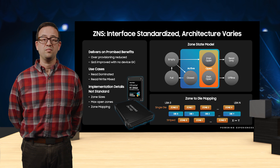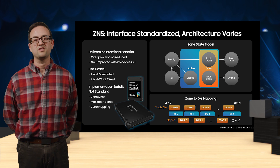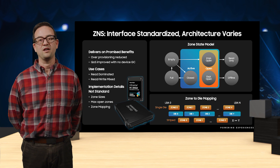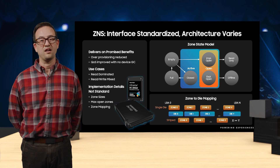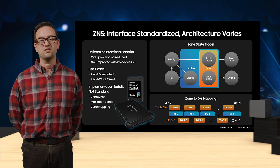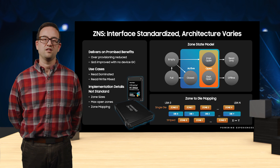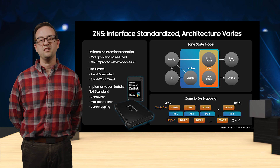Another implementation detail impacting performance and quality of service is how zones are placed on SSD dies, illustrated in the zone-to-die mapping figure. Striping across dies can improve bandwidth by leveraging multiple dies during read-write operations, but comes at the cost of making garbage collection impact all dies that the zone is striped across. This negatively impacts quality of service control. In a ZNS SSD, there are typically many more zones than dies, so working knowledge of the zone-to-SSD internal resource mapping is beneficial for applications.